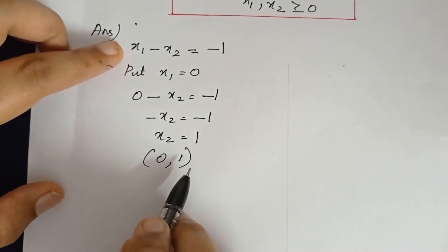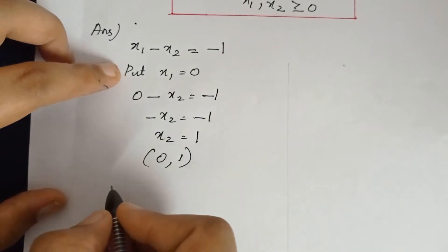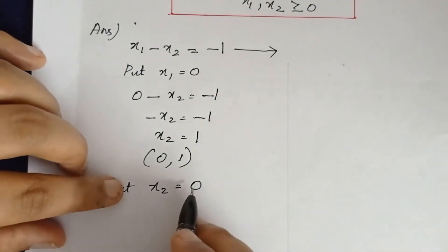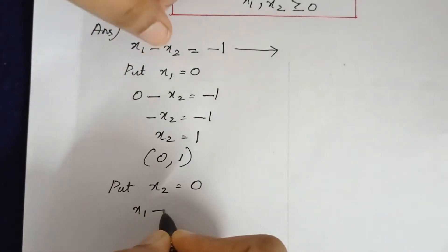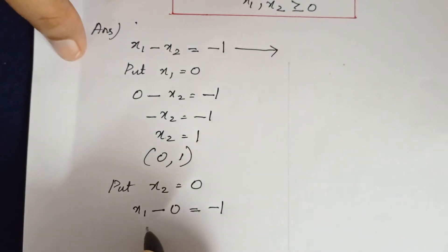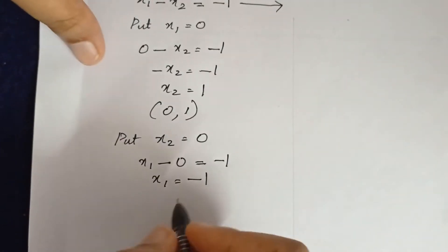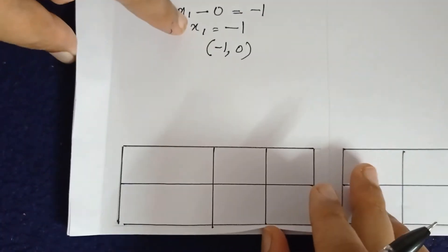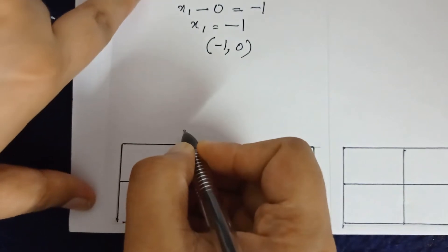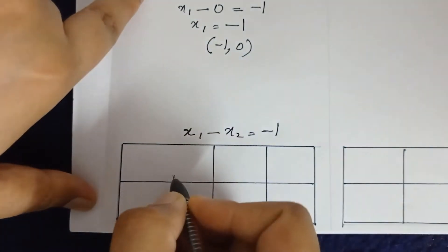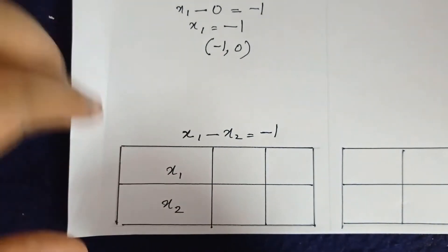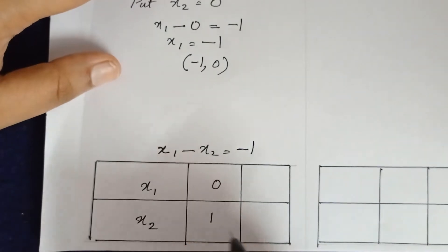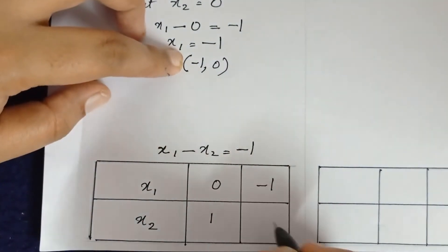For the second point, put x2 = 0 in the first constraint: x1 - 0 = -1, so x1 = -1. The second point is (-1, 0). We now have two points for the first constraint in the table: (0, 1) and (-1, 0).